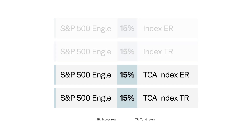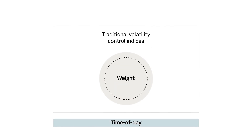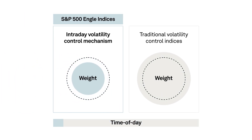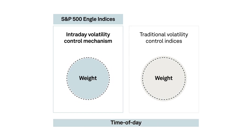The indices denoted by TCA are transaction cost adjusted. They deduct transaction costs from the index value to reflect costs associated with rebalancing and replication. Compared to traditional volatility control indices that rebalance at end of day, the intraday volatility control mechanism used in the S&P 500 Engel indices may allow for greater intraday responsiveness and more precise targeting to the specified volatility level.